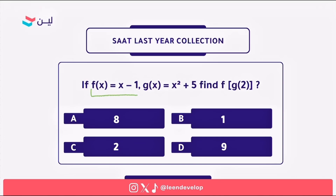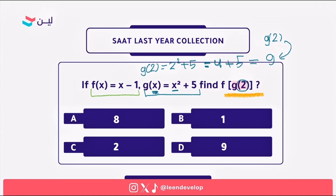The next question gives two functions: f(x) = x minus 1 and g(x) = x² plus 5, and we need to find f(g(2)). This means we first evaluate g(2), then substitute the result into f(x). Substituting x = 2 into g(x): g(2) = 2² + 5 = 4 + 5 = 9.